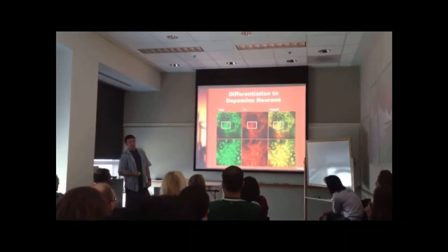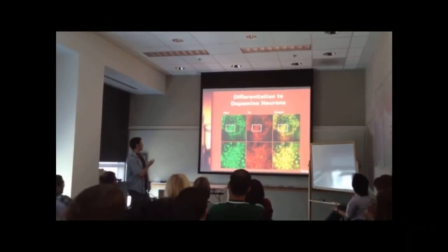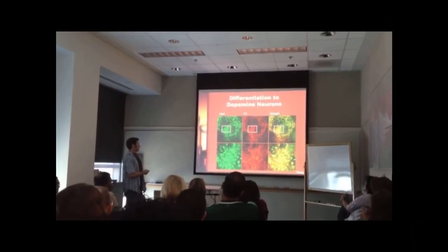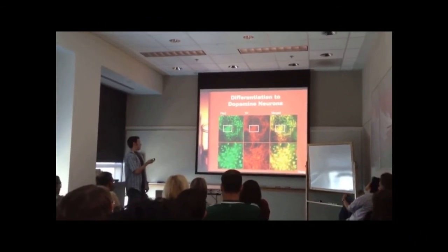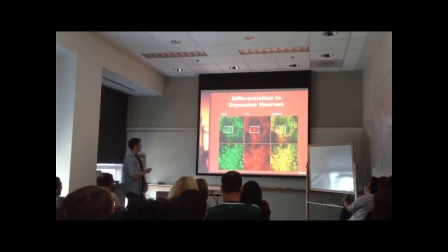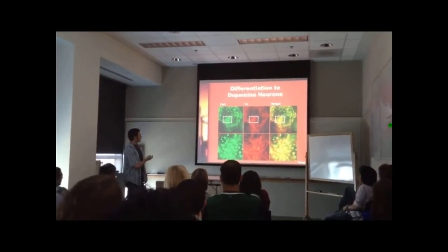These are representative images of dopaminergic neurons. These PIDX3 GFP-positive cells show dopaminergic neurons being expressed. PIDX3 is a transcription factor, so it's in the nuclei of the cells.